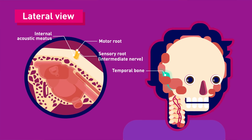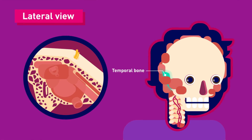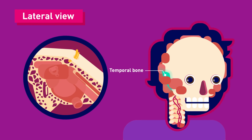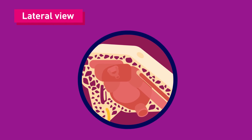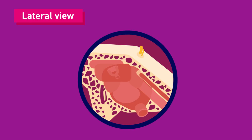Here, the roots are in very close proximity to the inner ear. Still within the temporal bone, the roots leave the internal acoustic meatus and enter into the facial canal. The canal is a Z-shaped structure. Within the facial canal, three important events occur. Firstly, the two roots fuse to form the facial nerve.